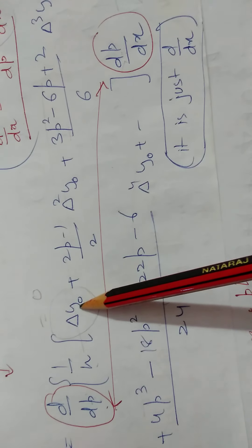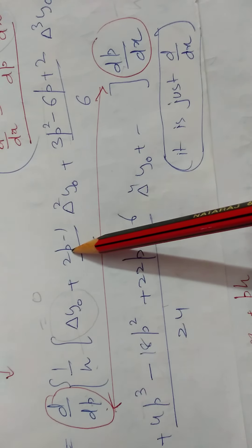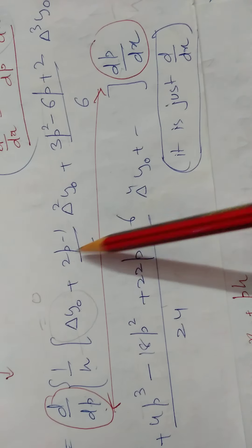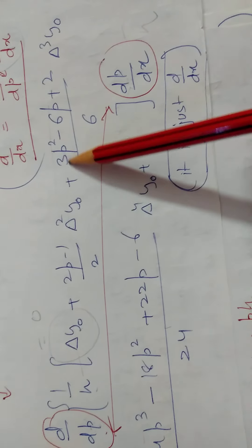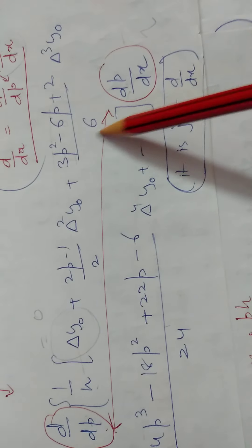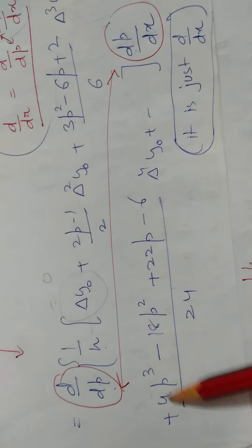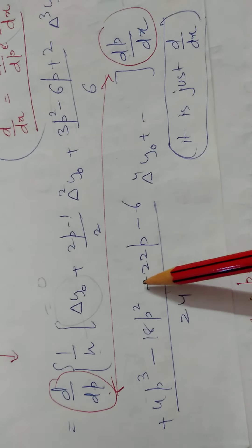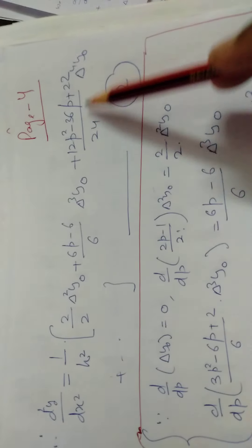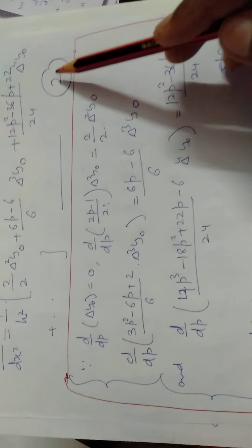We differentiate with respect to p. This factor becomes zero. This factor's value becomes two by two. Here comes six p minus six divided by six. Here comes 12 p square minus 36 plus 22 p. This way our value goes forward. This is equation two.